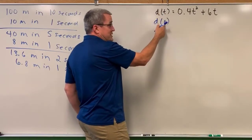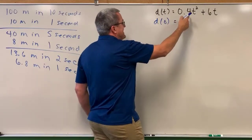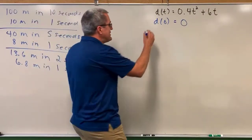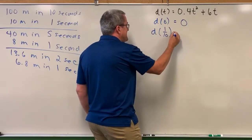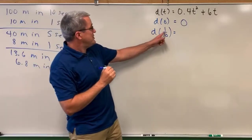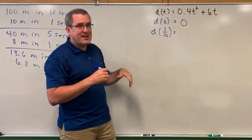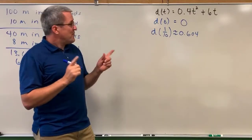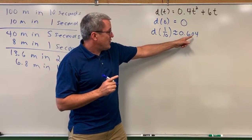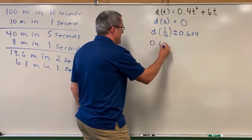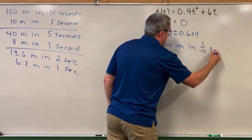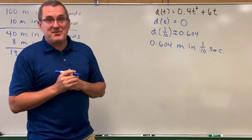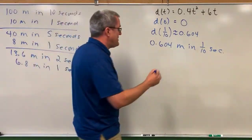Let's look at the first tenth of a second. When time is zero — the initial moment — the distance is zero: he's still at the starting line. If you replace time with one-tenth of a second and do the computations, we get approximately 0.604. That is, the runner traveled 0.604 meters in that tenth of a second. We could stop there and say that's his speed: 0.604 meters per one-tenth of a second.